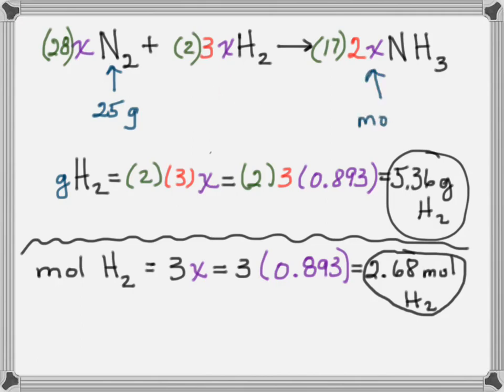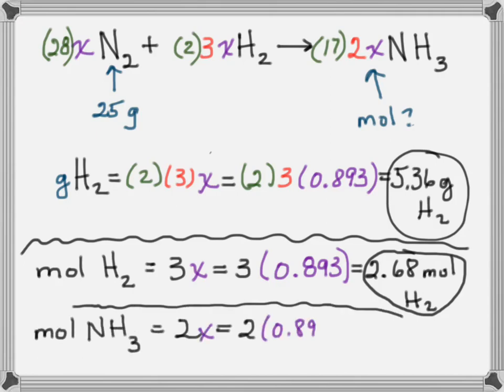What about the moles of ammonia? Again, leave the green numbers out. 2X, 2 times 0.893, 1.79 moles of ammonia. You can solve any stoichiometry problem this way.